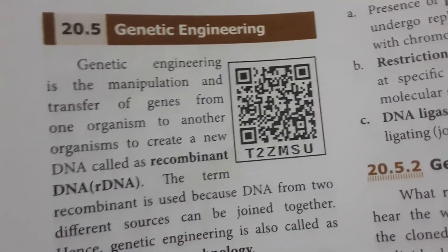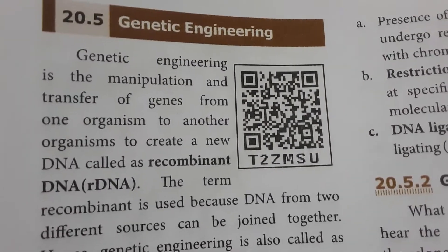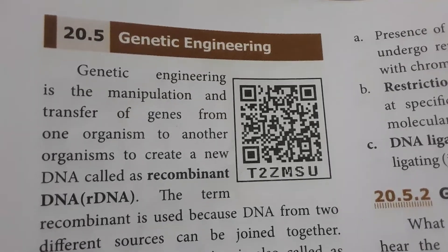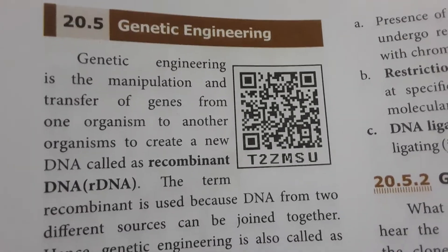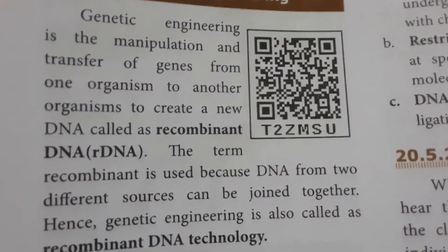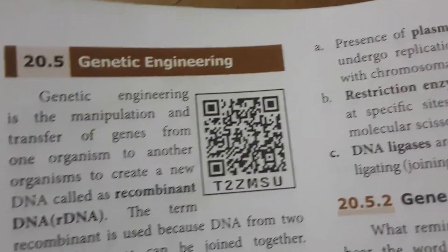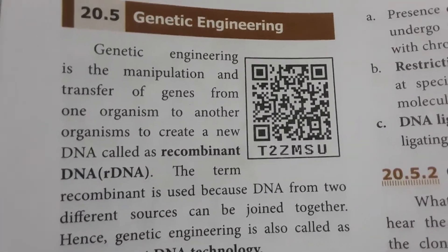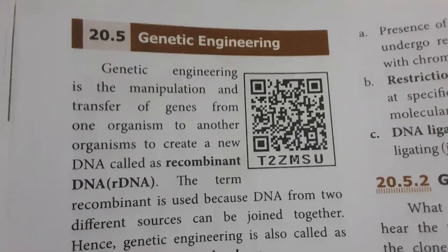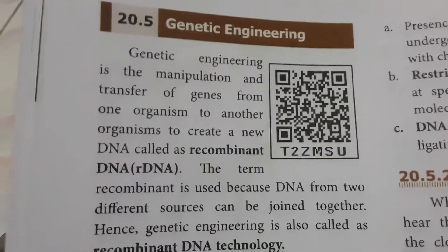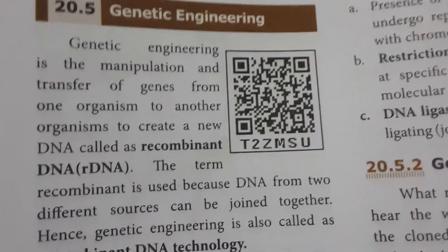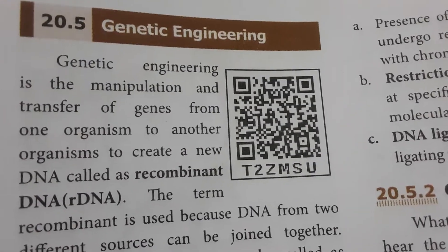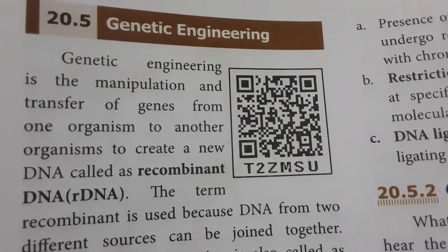For example, insulin production — diabetes is a condition where insulin injection is needed. The hormones and proteins involved are key. Our insulin DNA is mixed with bacterial DNA, which is called recombinant DNA. This is the basis of genetic engineering.